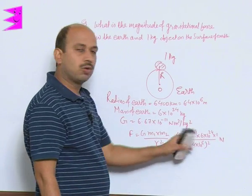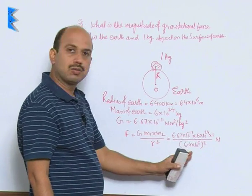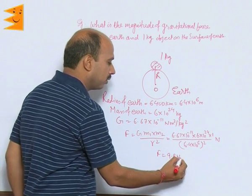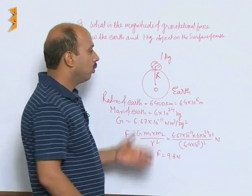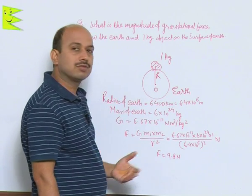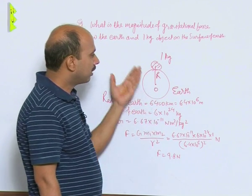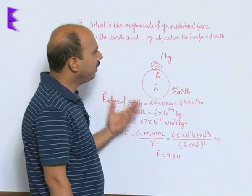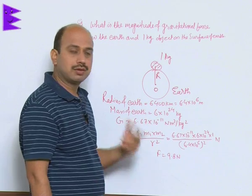Now if you solve all these things, do all these calculations yourself, you will be getting F is equal to 9.8 Newton. When 1 kg mass is placed on the surface of Earth, force acting on the 1 kg mass is 9.8 Newton. We can calculate gravitational force like this.